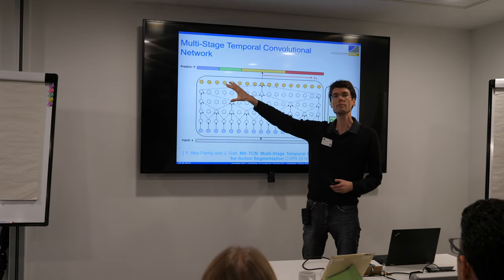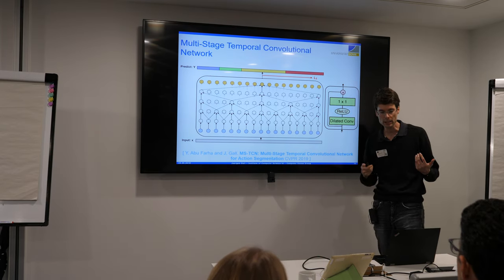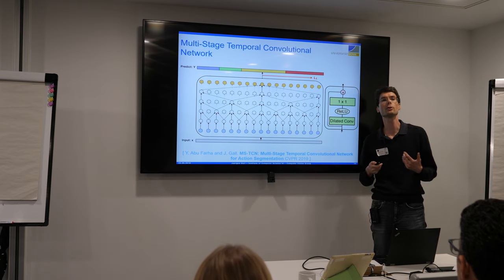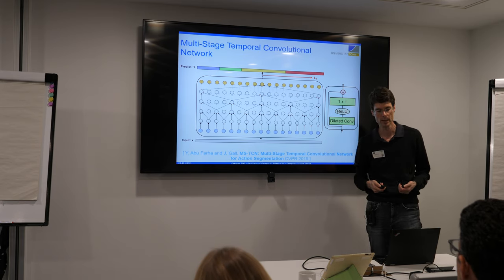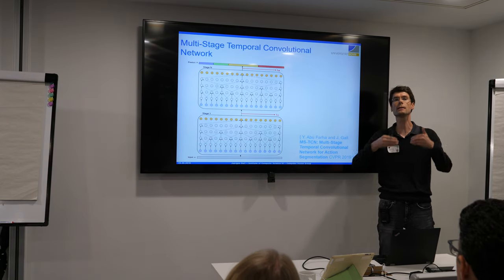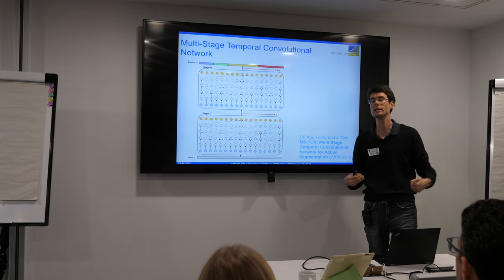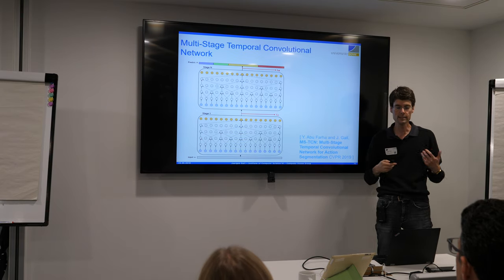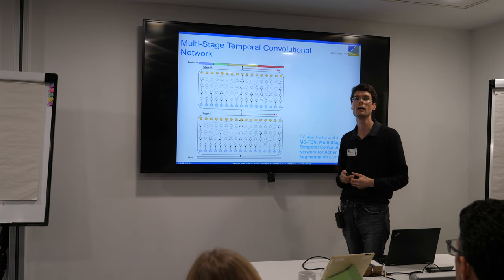It turned out that if you just take the network from audio or speech processing, it doesn't work well on video data — the accuracy was quite low. What helped was stacking network blocks, similar to what people do in human pose estimation. We increase the receptive fields while having intermediate losses at different levels, creating a hierarchy of temporal relations. This was essential — it gave much better results than just adding more layers.